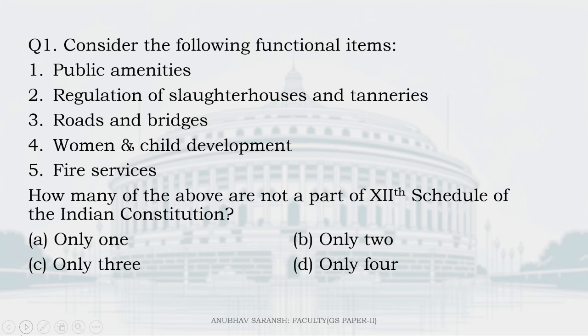First question: consider the following functional items — public amenities, regulation of slaughterhouses and tanneries, roads and bridges, women and child development, fire services. How many of the above are not a part of the 12th Schedule of the Indian Constitution?